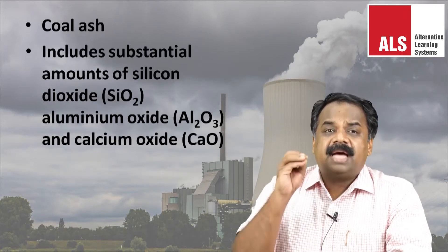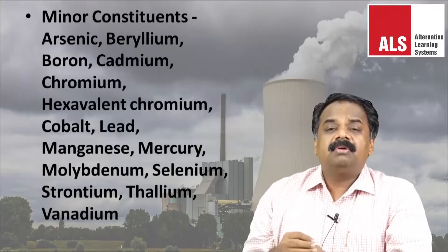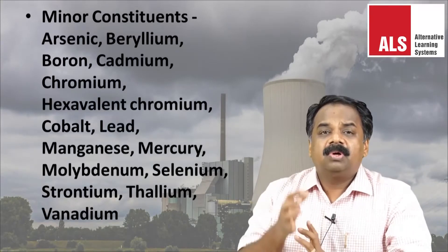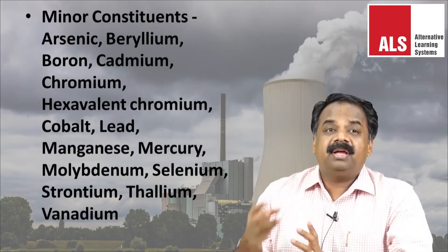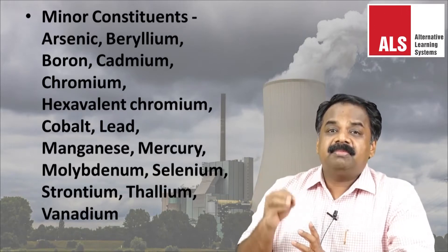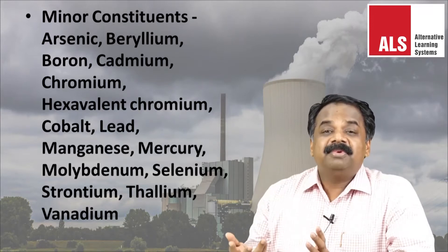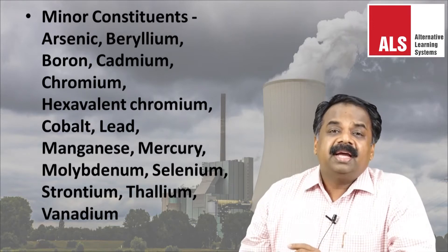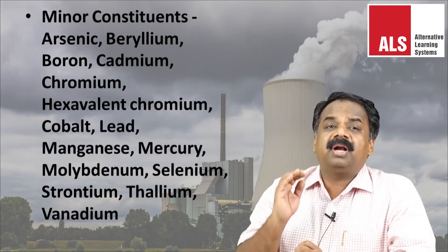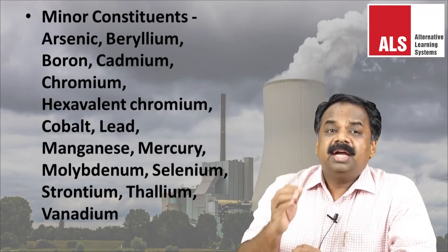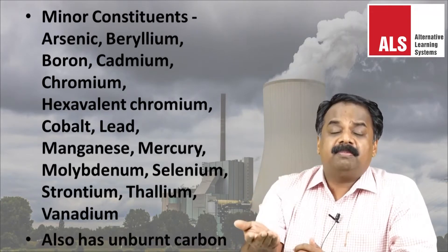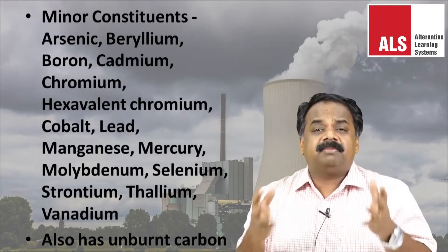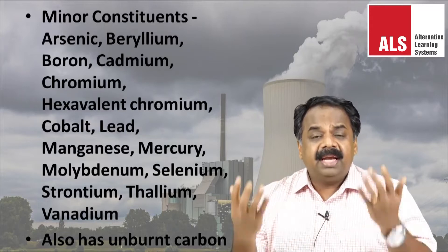Fly ash generally includes silicon dioxide (SiO2), aluminum oxide (Al2O3), and calcium oxide (CaO) as main components. Depending on the coal source, it also contains minor but harmful constituents including arsenic, beryllium, boron, cadmium, chromium, hexavalent chromium, cobalt, lead, manganese, mercury, molybdenum, selenium, strontium, thallium, and vanadium. Many of these micro components are harmful to health, and fly ash also contains unburned carbon.